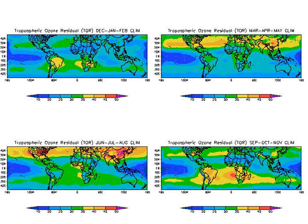The troposphere is the lowest layer of the Earth's atmosphere. It extends from the ground up to a variable height of approximately 14 km above sea level. Ozone is least concentrated in the ground layer or planetary boundary layer of the troposphere. Its concentration increases as height above sea level increases, with a maximum concentration at the tropopause.